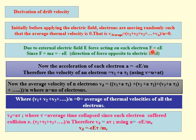The negative sign shows that the direction of drift velocity is opposite to the direction of electric field.